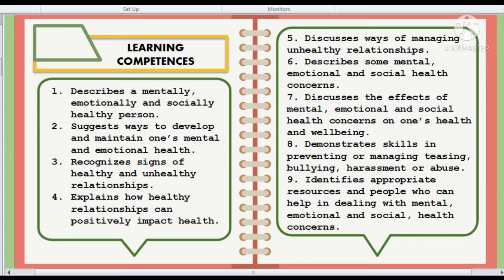Number nine: identify appropriate resources and people who can help in dealing with mental, emotional, and social health constraints. This is considered an advantage for learners' consultation. They will not hesitate to go to counseling, support groups, and medical professionals who can help with emotional problems or mental illness. If they have ongoing emotional problems, they could easily trace a doctor's specialization to help them find the right type of treatment. That's all for my part. Thank you.